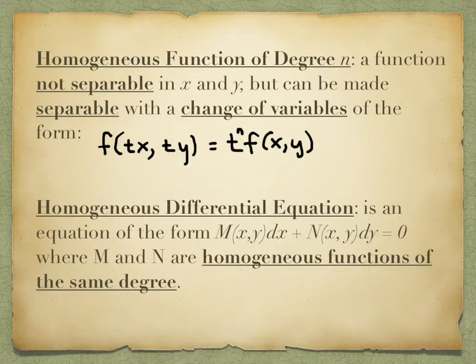In other words, it cannot be separated using the methods we were doing before — we can't just add, subtract, multiply, divide, and move things around. But we are able to make it separable if we change some variables. You guys know how to change variables; that's equivalent to doing something like a u-substitution. The change of variables has the form that if we replace the x variable with tx and the y variable with ty, that's equivalent to being able to factor out a power of t — t to some power n — and that n is called the degree.